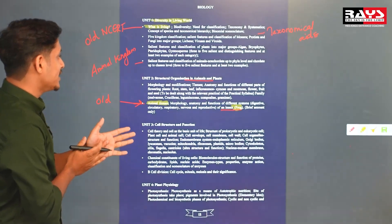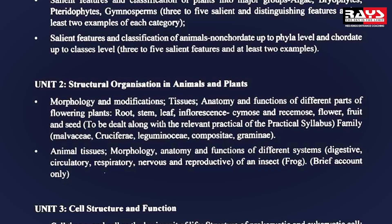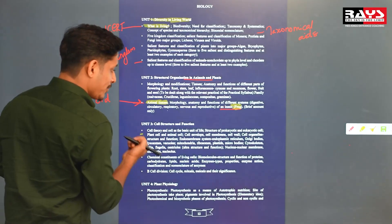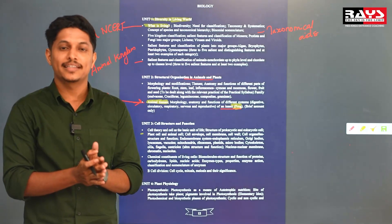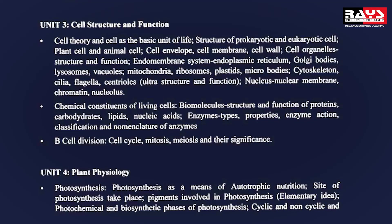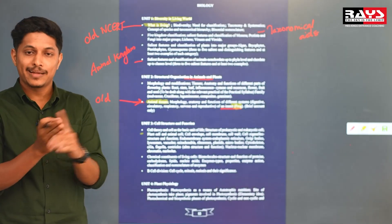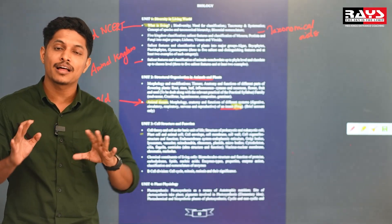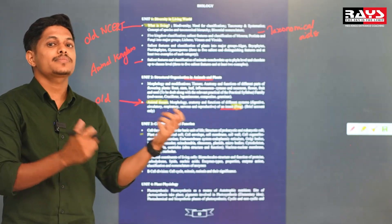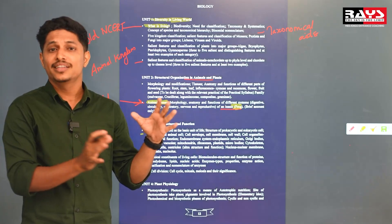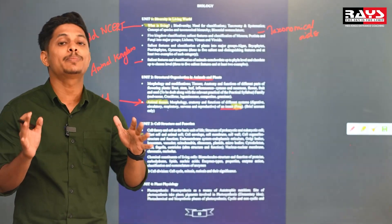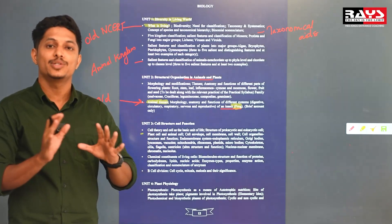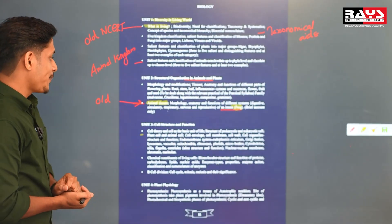Here we also use biomolecules. We use structural organization, cell structure and function, and biomolecules. The dynamic state of body constituents — metabolism — is covered under biomolecules. The nature of linking bonds may be missing. If you use biomolecules, all biomolecules are included: amino acids, proteins, carbohydrates, lipids, nucleic acids, and also enzyme kinetics. So there is no confusion.